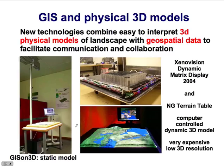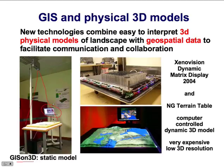To facilitate communication of three-dimensional information using easy-to-interpret three-dimensional solid models, several new technologies were developed over the past decade. One of them is relatively simple: digital GIS on 3D, where the geospatial data stored in a geographic information system are projected over a solid model. The digital model is static, but the data that are projected can change and are based on the data stored in GIS.